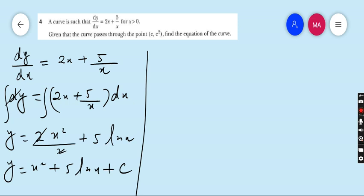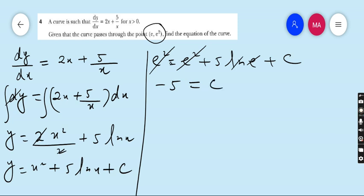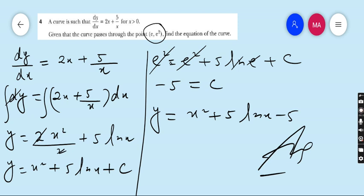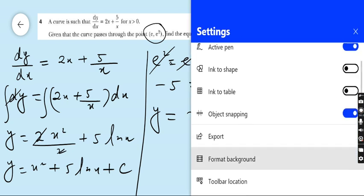Now find the value of c by substituting the given coordinate e, e square. So y is e square, x is e. It is e square plus 5 ln e plus c. e square cancel by e square. ln and e cancel. This 5 should be transferred on left hand side, so the value of c is minus 5. Hence, equation of curve is equal to x square plus 5 ln x plus c. C is minus 5. If this is our final answer. Very easy question. If your concept is clear, then all questions are very easy.